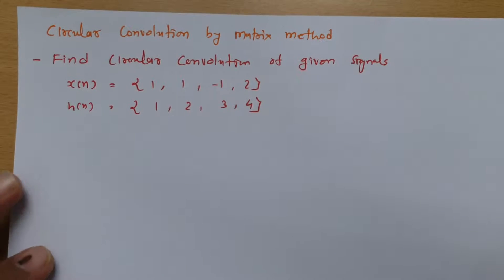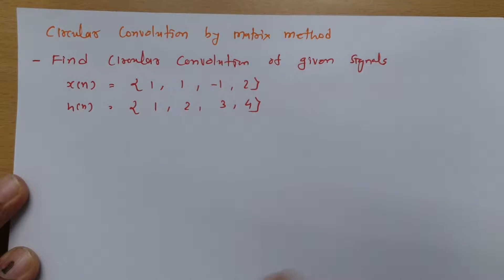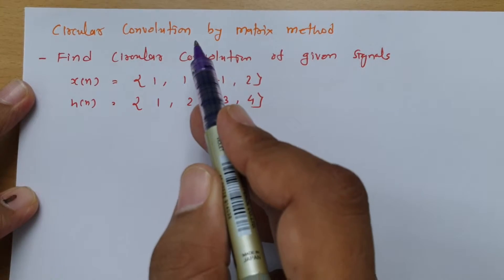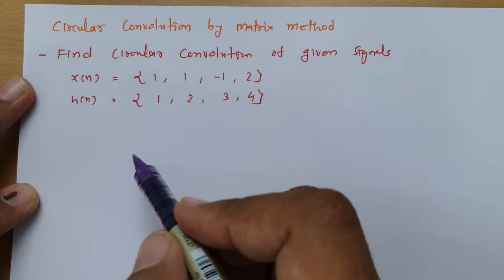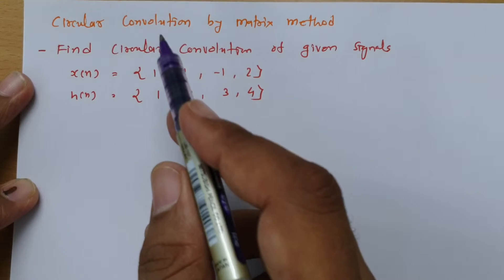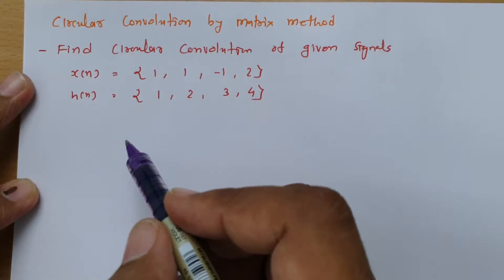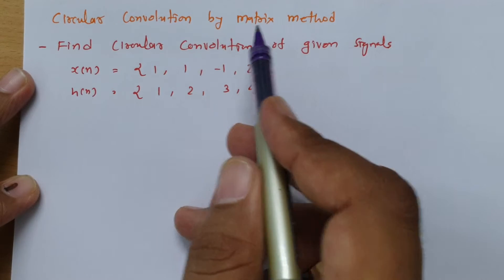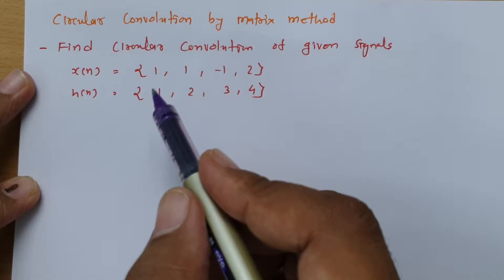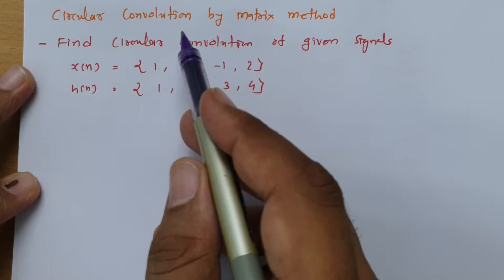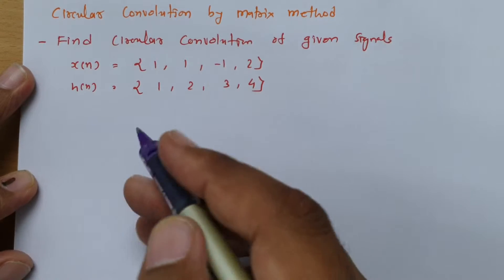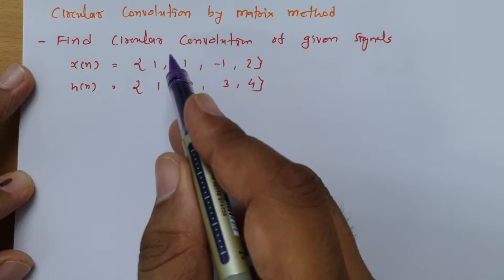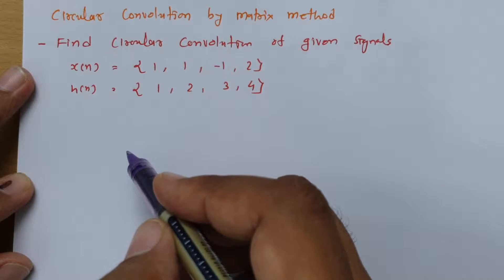Welcome to signal and system lecture series. In this session, I will be explaining circular convolution by matrix method. In the previous session, I explained circular convolution. Now in this session, I will be explaining circular convolution by matrix method. To understand how to solve circular convolution by matrix method, we have one question. So let us solve this question with the matrix method of circular convolution.